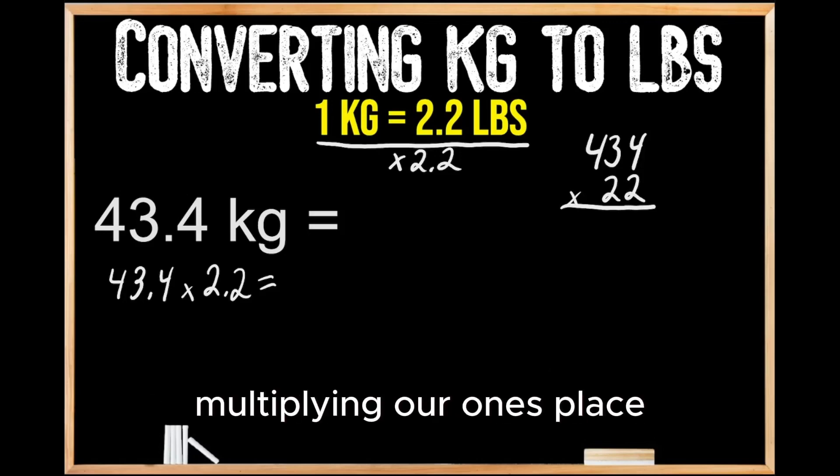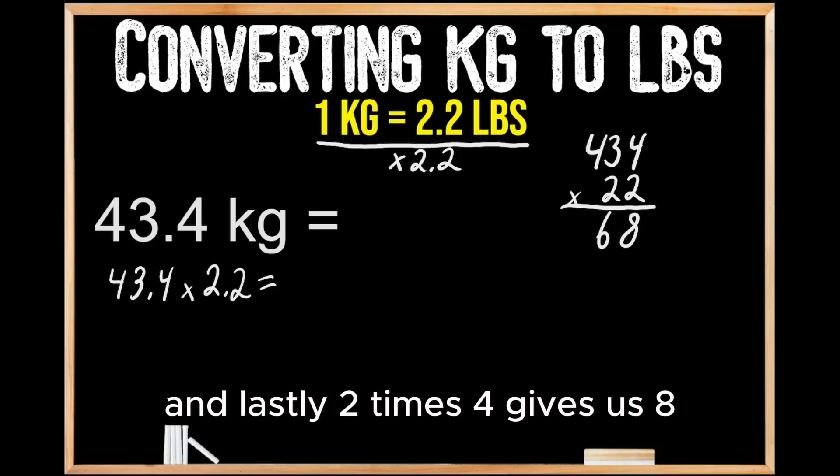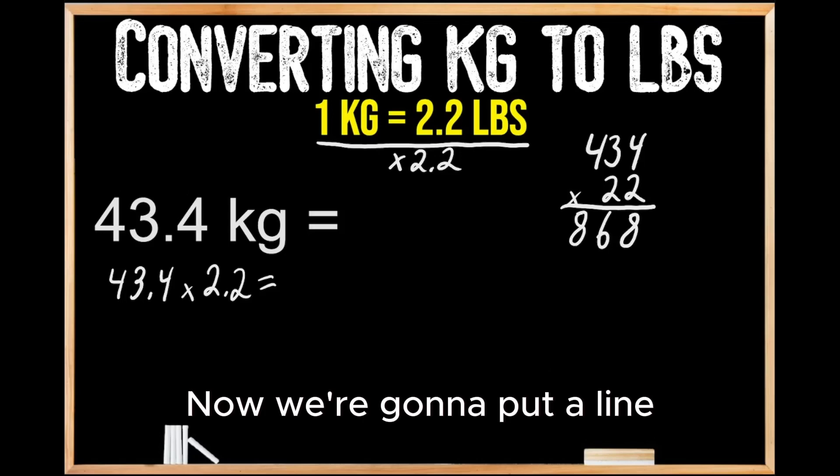So let's start out by multiplying our ones place by the top number. So 2 times 434. 2 times 4 gives us 8. 2 times 3 gives us 6. And lastly, 2 times 4 gives us 8 once again for 868.